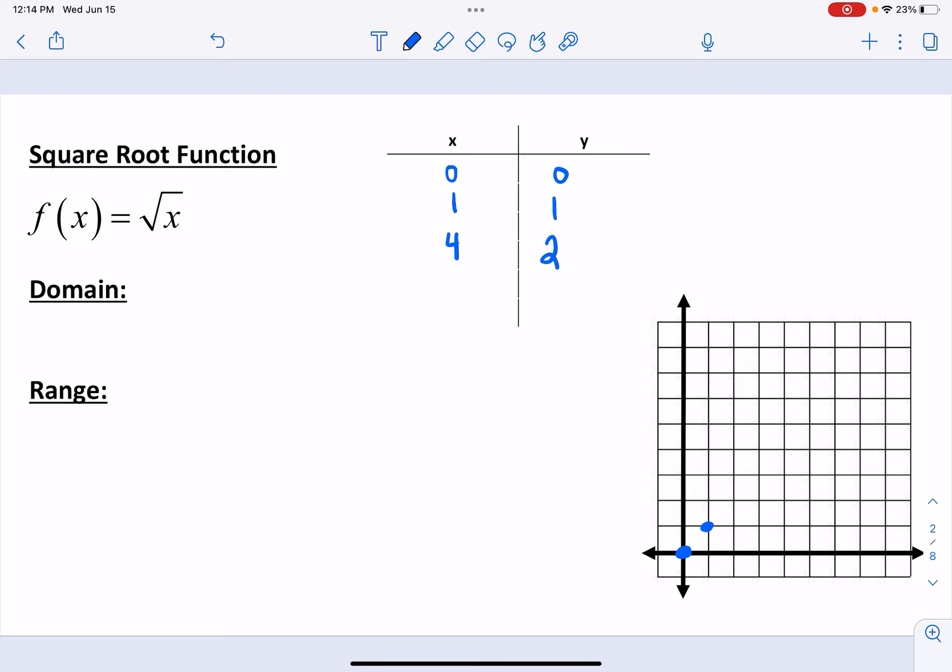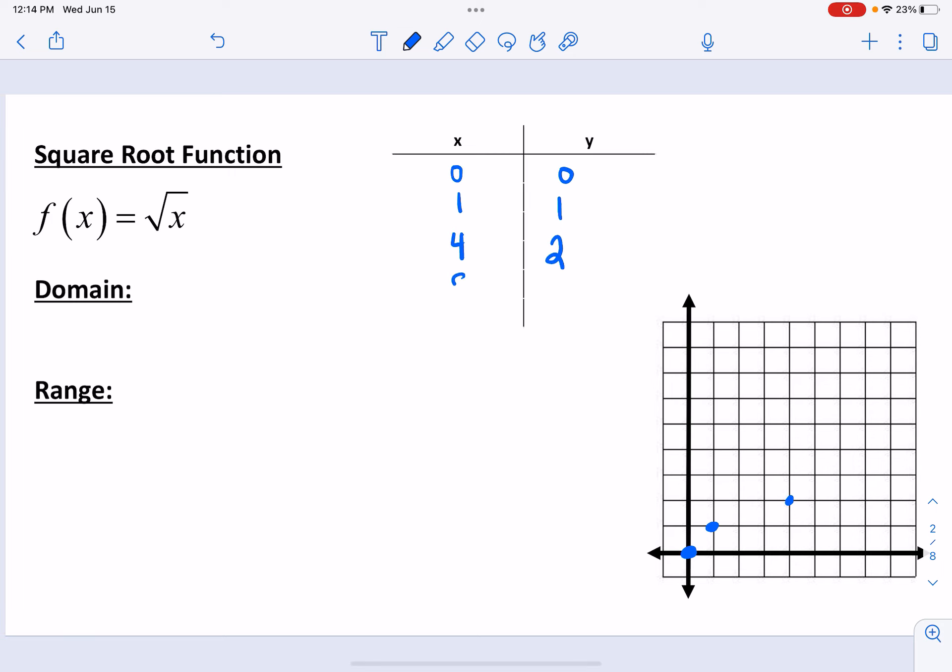So I go over 4, 1, 2, 3, 4, up 2. And then pick another perfect square, which is 9. The square root of that is 3. So I go 1, 2, 4, 5, 6, 7, 8, 9, and up 1, 2, 3. And because of the grid, that's all I have room for, but we could continue picking points if we wanted to.